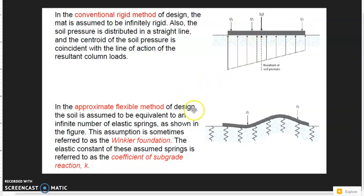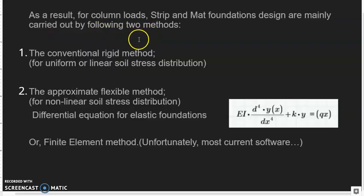But in the case the foundation rigidity is very small, then we will use approximate flexible method. This is a very complicated method. Basically, we have two methods to design foundation. First one, the common method is called the conventional rigid method. It is for uniform or linear soil stress distribution. But the approximate flexible method is for non-linear soil stress distribution.